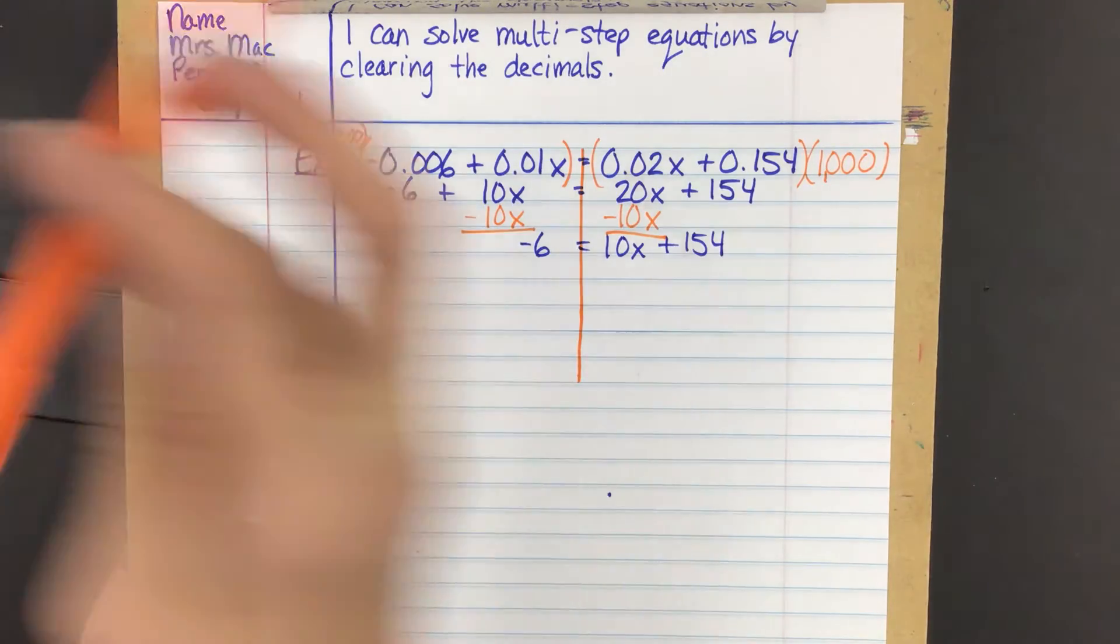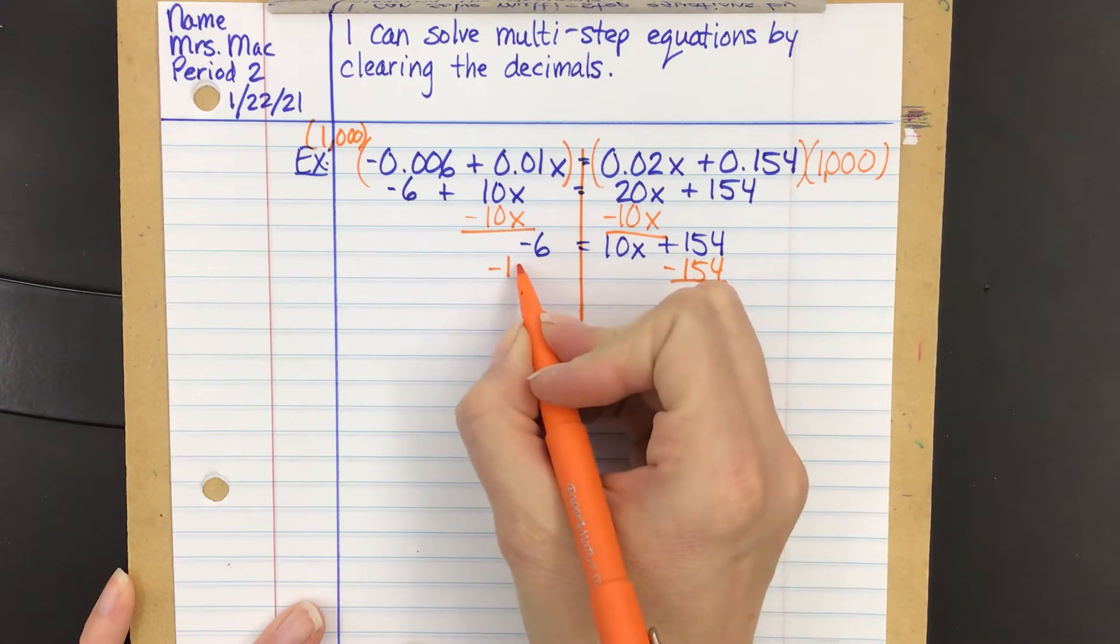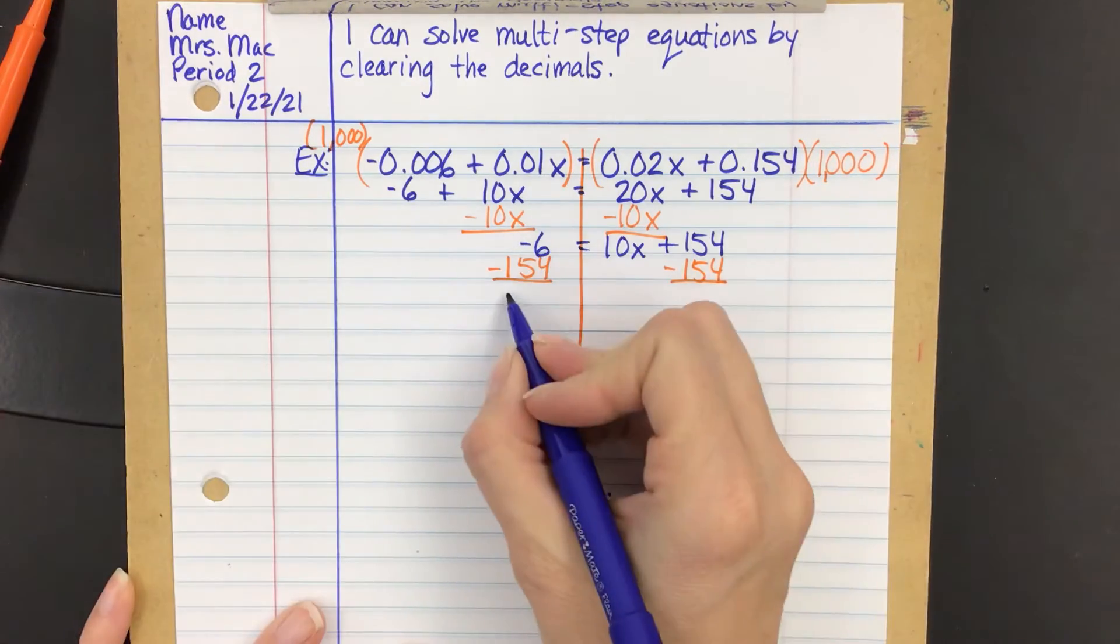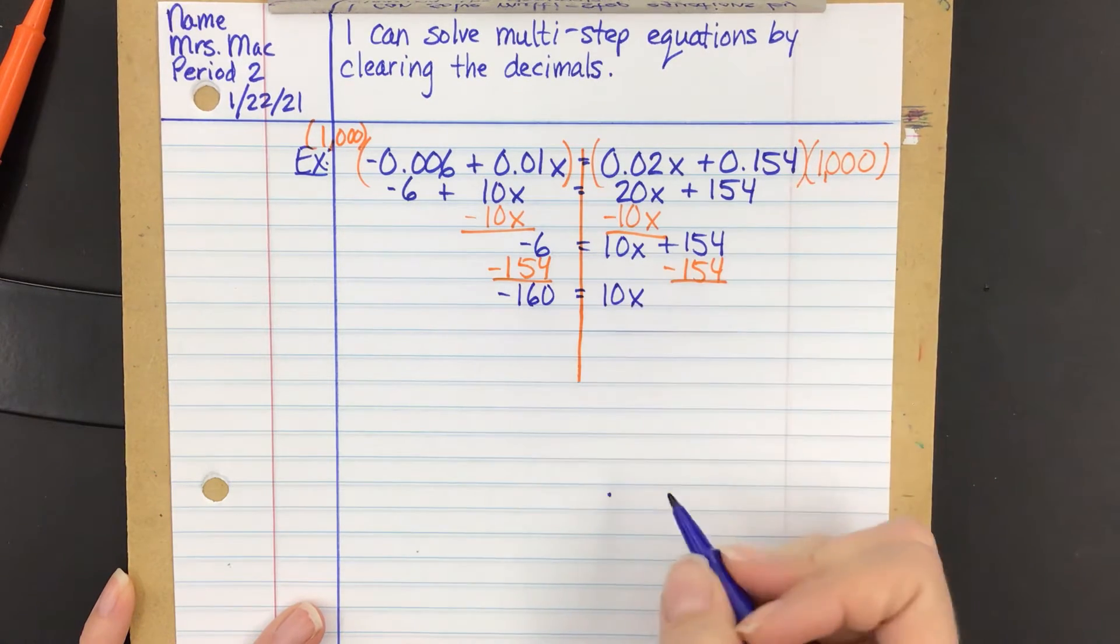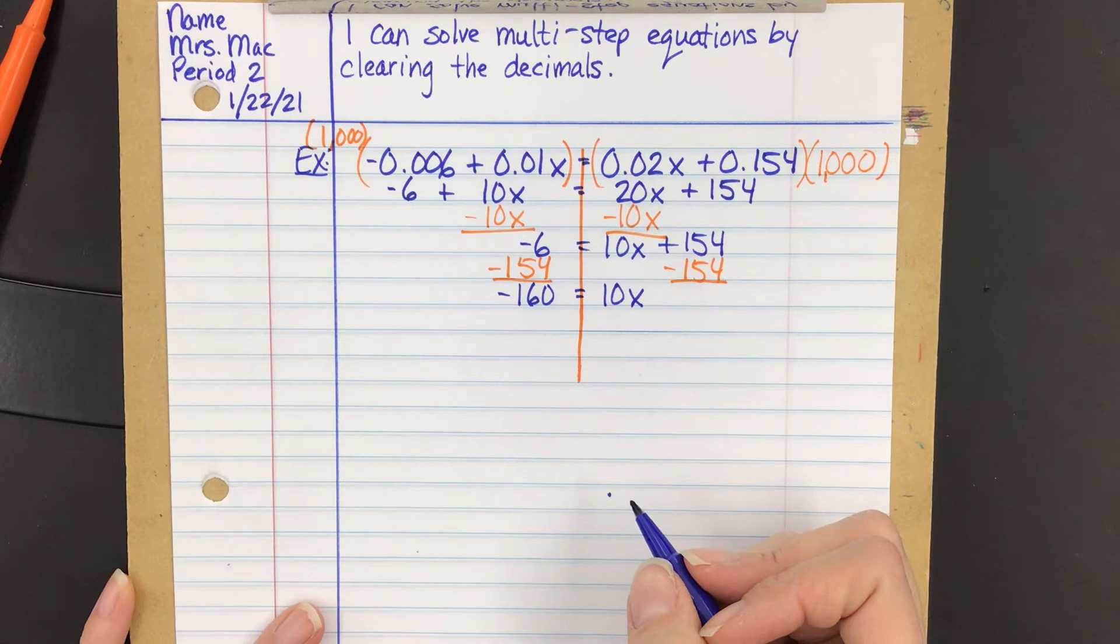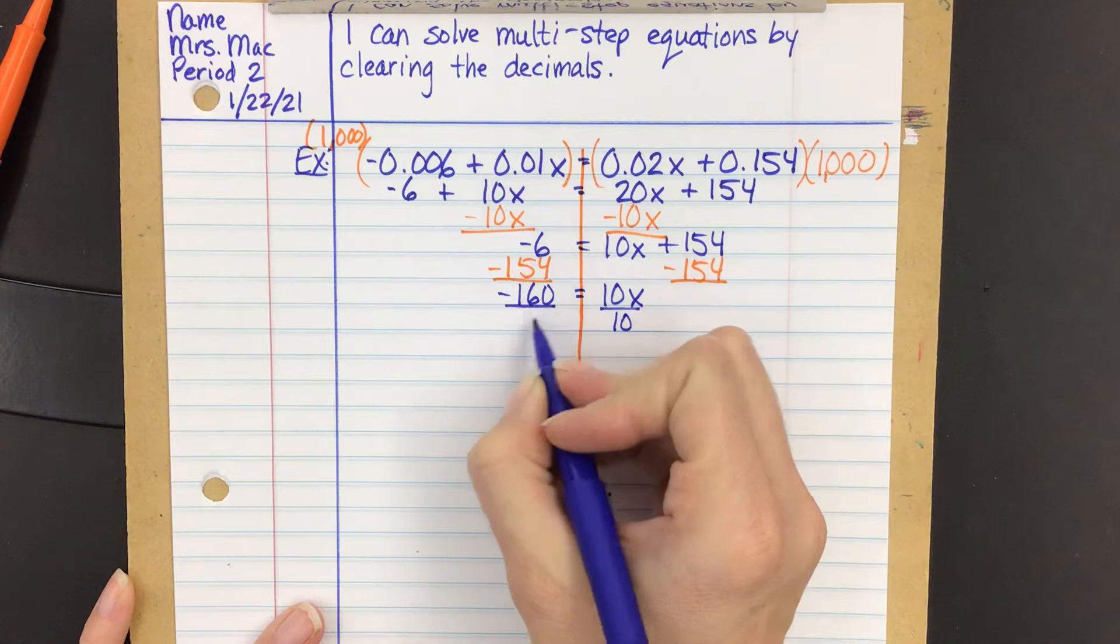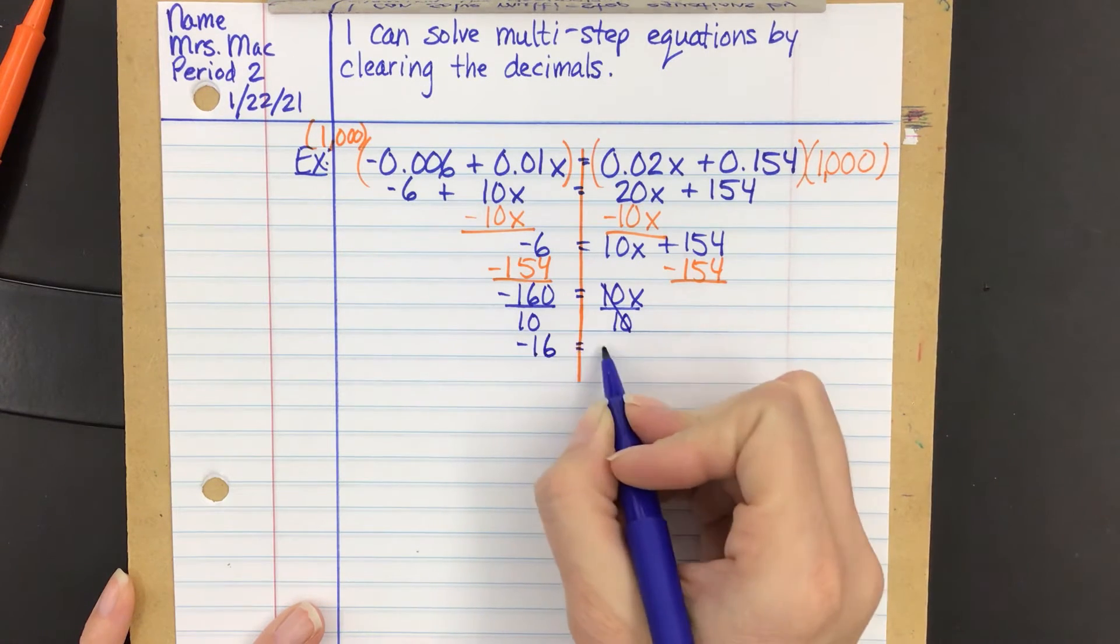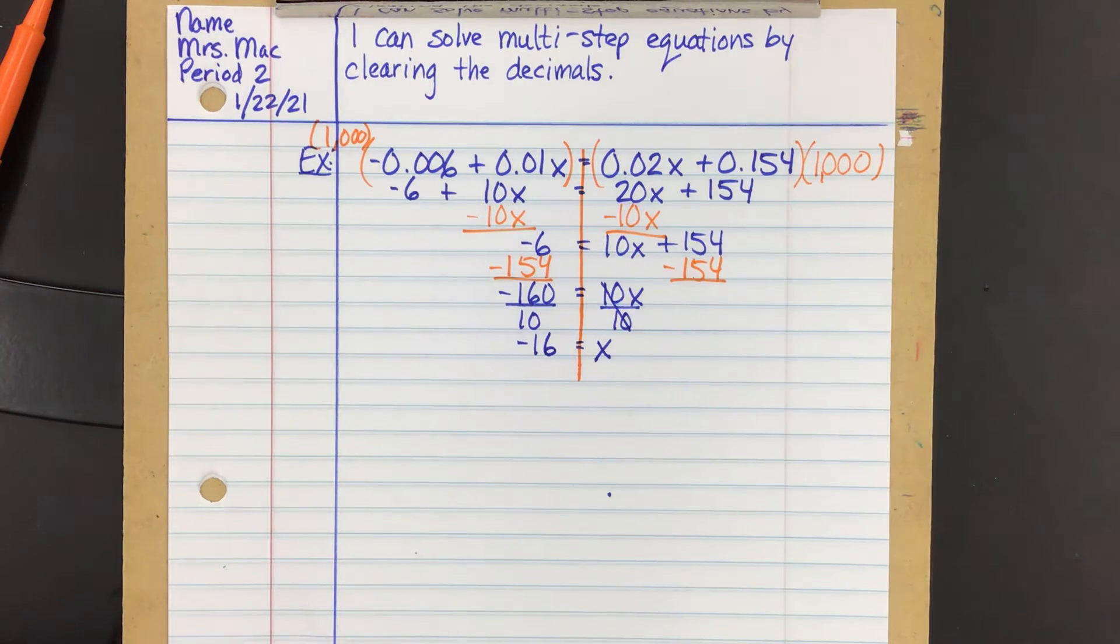Then I am going to subtract 154 from both sides. And I'm left with negative 160 is equal to 10x. And we're going to divide both sides by 10. And we get negative 16 is equal to x. Kind of nice, right? To get rid of all those decimals before you solve it.